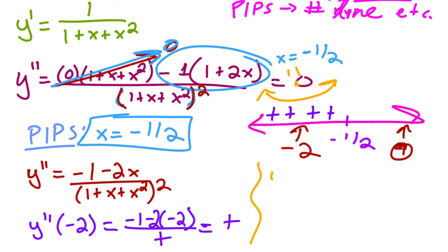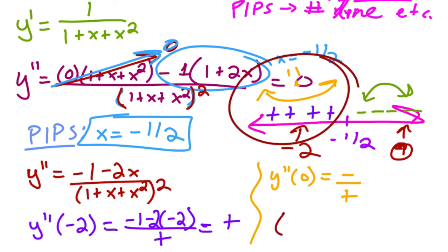Okay, and then I plug in zero and I get negative over positive, which means it's concave down. And so then what I'm looking for, the interval what the question is asking for, is where is it concave up? So that would be right here. So it's concave up on the interval from negative infinity to negative one half. And that's it.